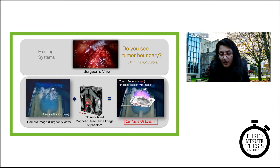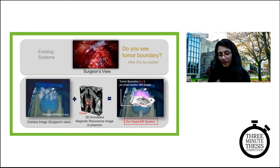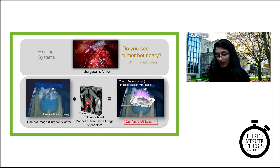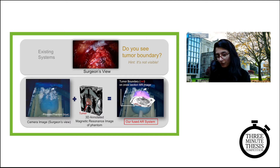Blue is the prostate. In the middle, you can see the MRI of the same prostate model, and this MRI is annotated for cancer by a radiologist. And on the very right, you see my augmented reality system where the MRI can be seen, with the visible cancer highlighted in red. It's the cross-section of the phantom, so a surgeon can see inside of the prostate.